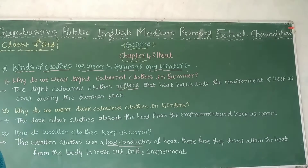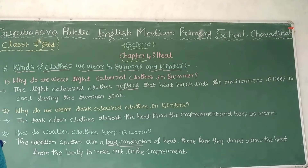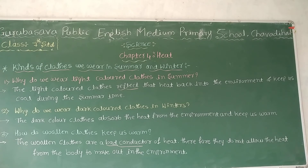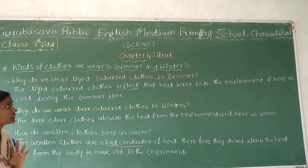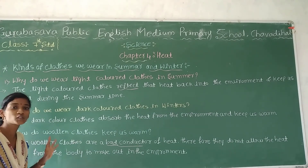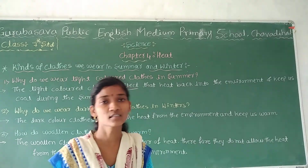Woolen clothes are bad conductors of heat. Therefore, they do not allow heat to escape. The air present between the woolen cloth layers and our body becomes trapped and this is why we feel warm. Similarly, two thinner blankets provide more warmth than one thicker blanket because air can be trapped between the two thinner blankets. That is clear, dear students. We will continue in our next class. Thank you for watching.